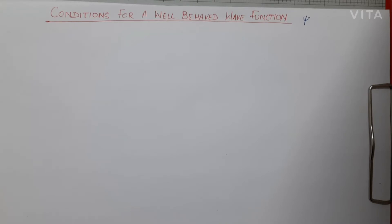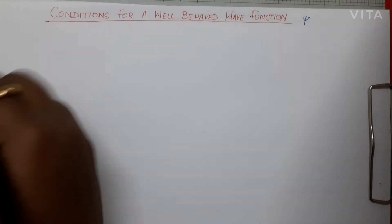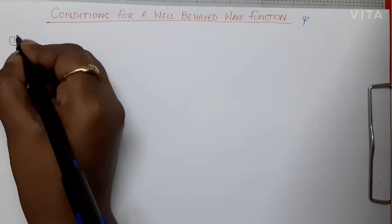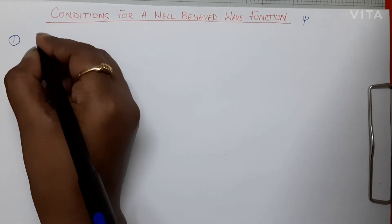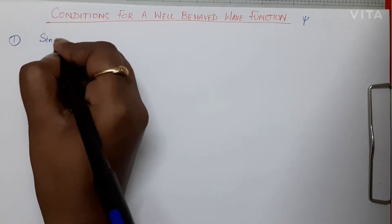For a wave function to be well-behaved, it should follow some conditions — actually three conditions — which we have studied in BSc and in class 11 and 12 as well. Now we are going to revise those. The first condition is that the wave function should be single-valued and finite.